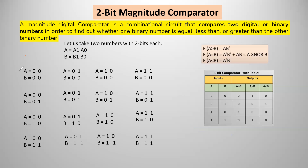Looking at the binary combinations: when a=00 and b=00, both are equal — that's the equality relation. Next, a=01 and b=00: starting from MSB, both MSBs are 0 — equal — so we move right. The LSB of a is 1, so a is greater than b. In the combination where MSB of a is 1 and MSB of b is 0, directly we say a is greater than b.